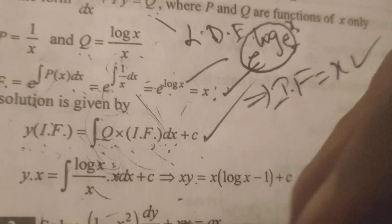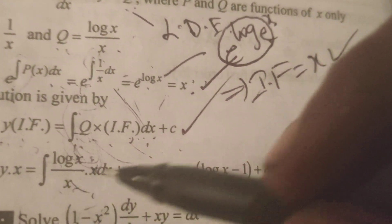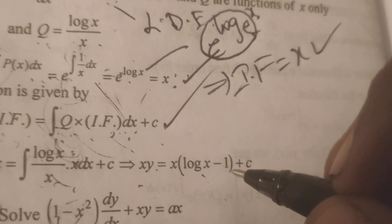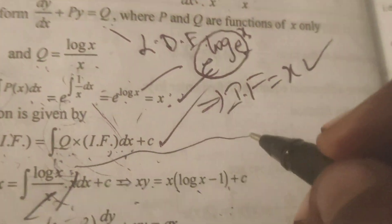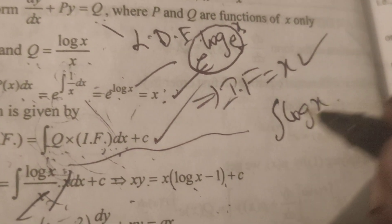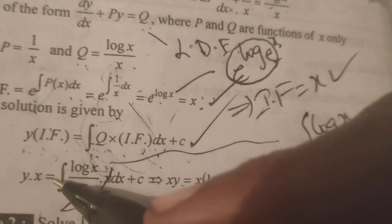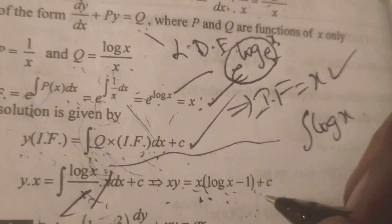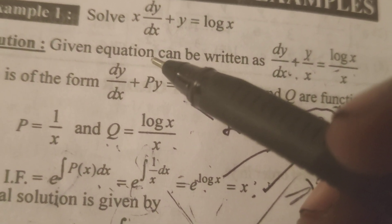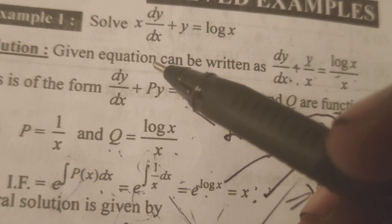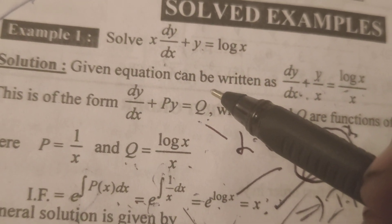So x y equals to integral of log x by x into x dx plus c. The x terms cancel, giving integral of log x dx, which equals x log x minus x plus c. Therefore, x y equals x into (log x minus 1) plus c. This is the solution of the given differential equation x dy/dx plus y equals to log x.